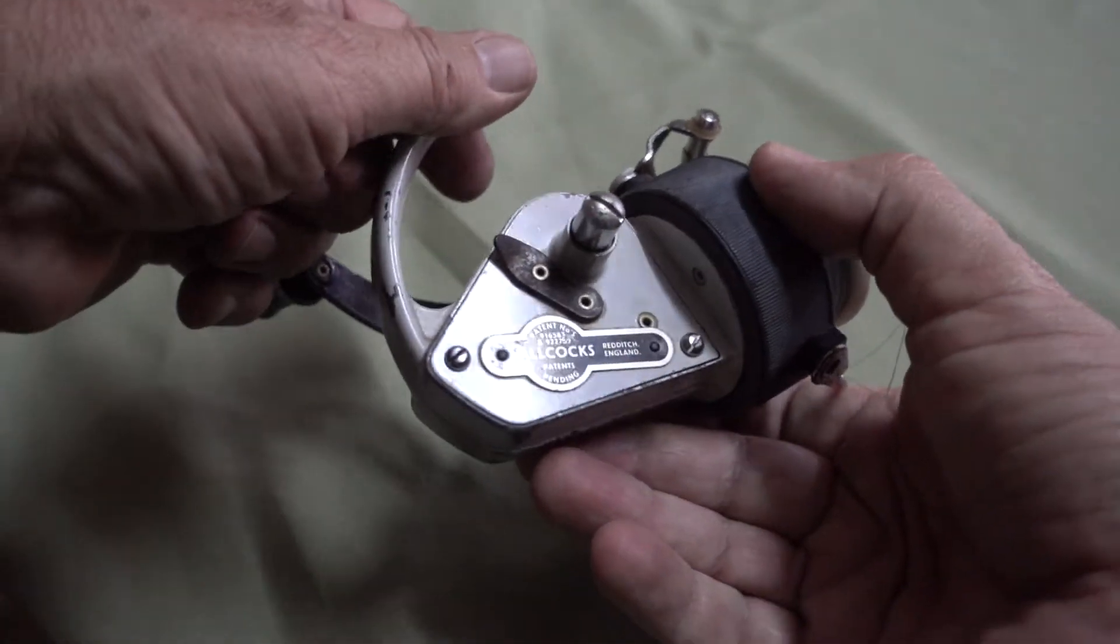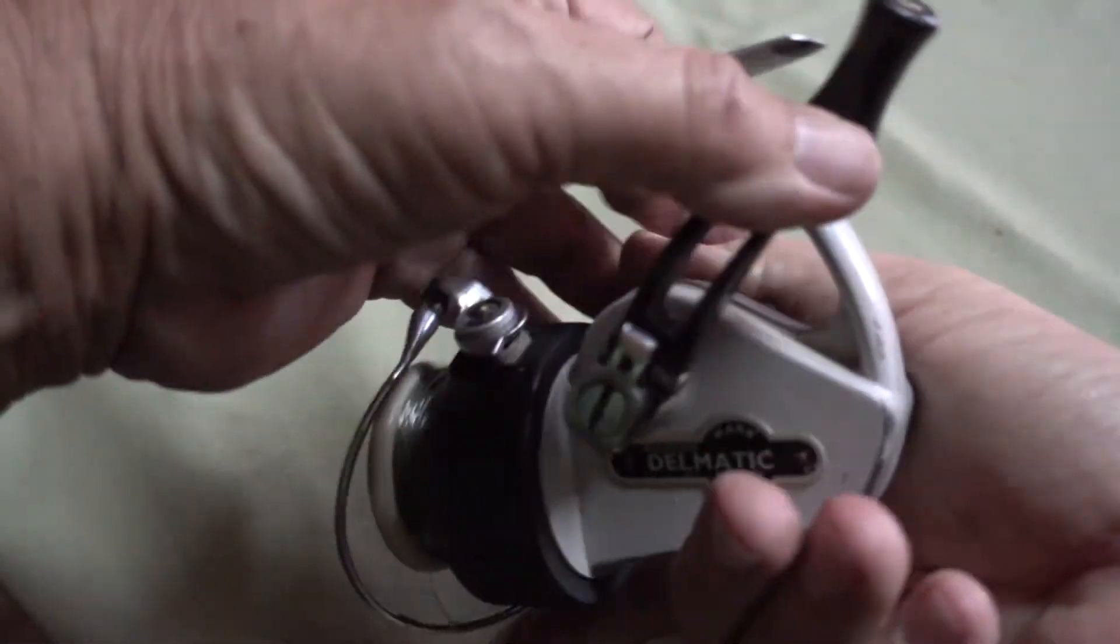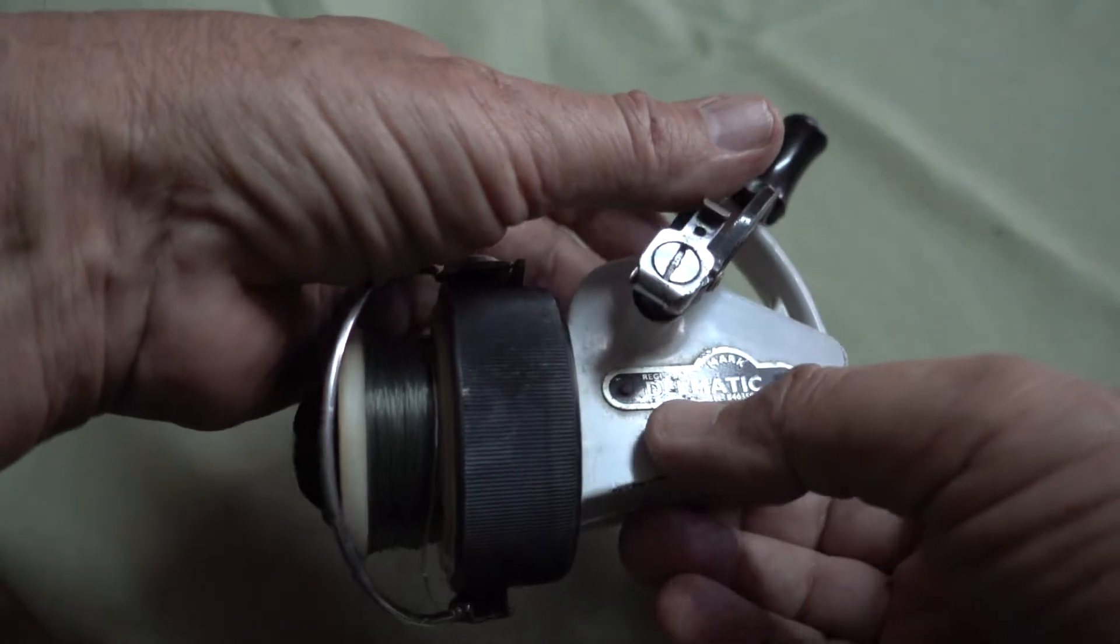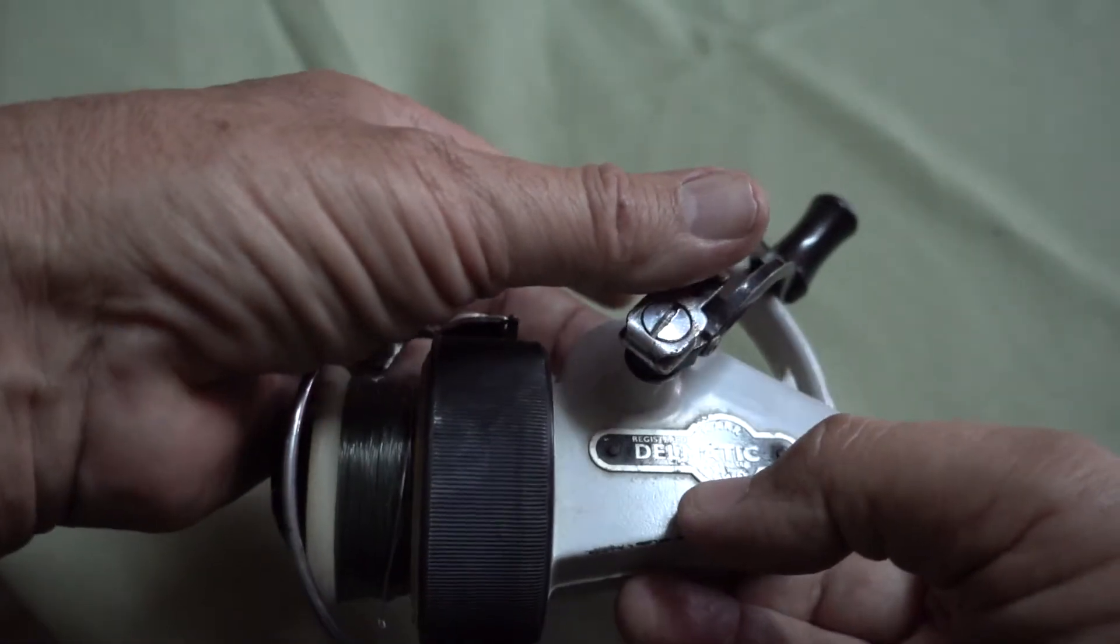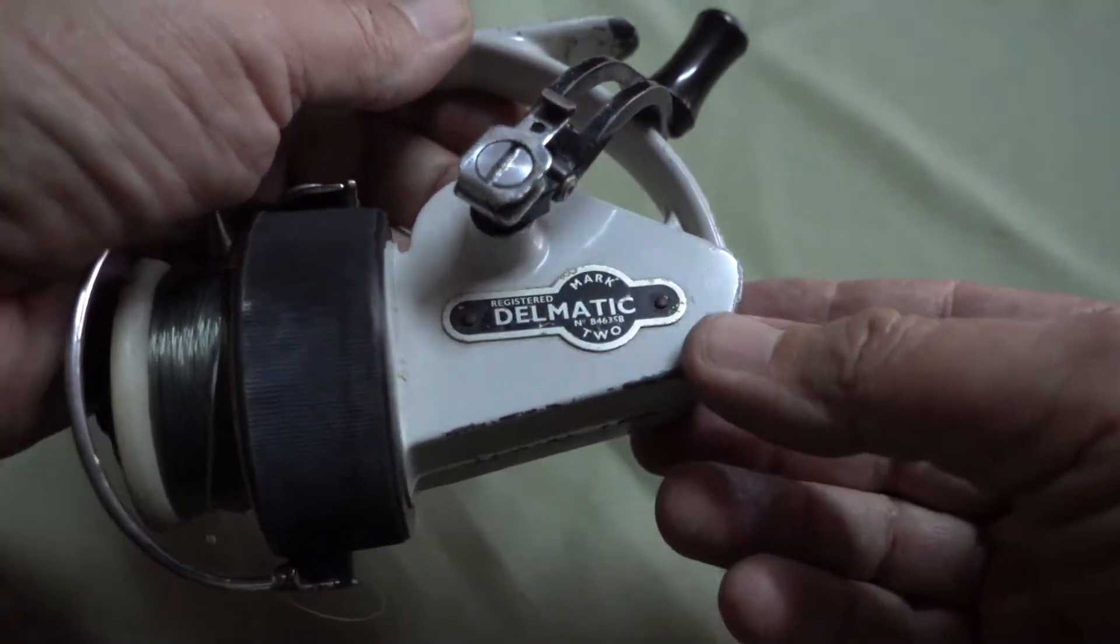So this is the Alcox badged Delmatic. It's called a Delmatic because it had Delrin gearing inside which made it very smooth. Called a Mark II, there were never any Mark I's or none have ever been seen.